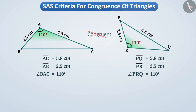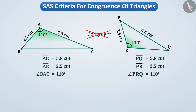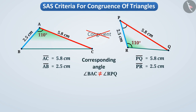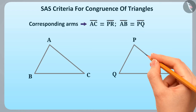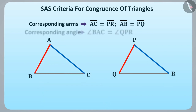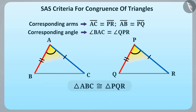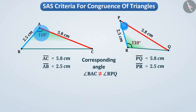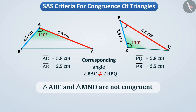But these two triangles are not congruent. Can you tell the reason? In angle PRQ, the angle is not between sides PQ and PR — angle PRQ is not the included angle between sides PQ and PR. By this, we can see that the corresponding angle BAC is not equal to angle PRQ. For SAS congruence, two sides and the included angle between them must be equal. Here the corresponding angles are not equal, so the SAS congruence rule cannot be applied.